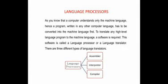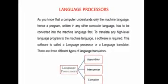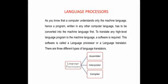In this part you will learn about language processes. As you know, a computer understands only the machine language. Hence, a program written in any other computer language has to be converted into machine language first. This work is carried out by a special software called a language processor or language translator.